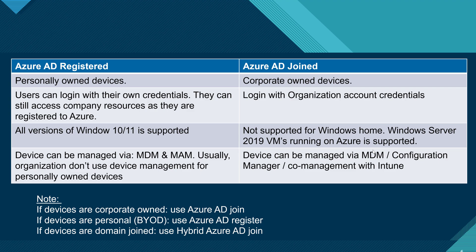Now for the comparison between Azure AD Registered and Azure AD Joined: Registered is for personally owned devices while Joined is for corporate-owned devices. For Registered, users log in with personal credentials like a Hotmail or Gmail account; for Joined, you must use your organization's Azure AD account. Azure AD Registered supports all versions of Windows 10 and 11, while Azure AD Joined does not support the Windows Home edition.